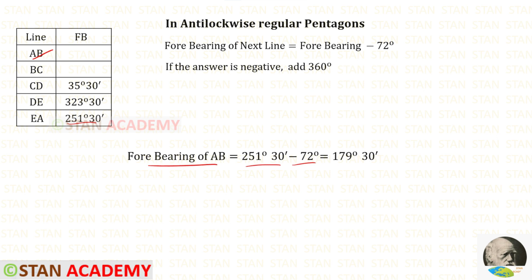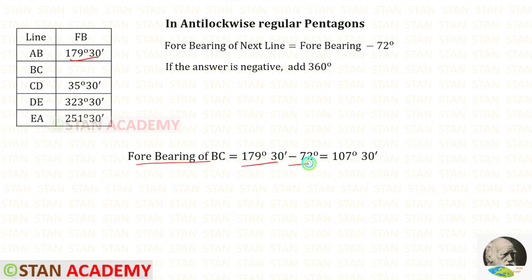We will get 179 degrees 30 minutes for line AB. Now let us find the forebearing of BC. 179 degrees 30 minutes minus 72 degrees gives us 107 degrees 30 minutes.